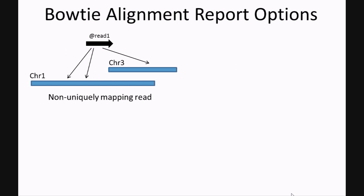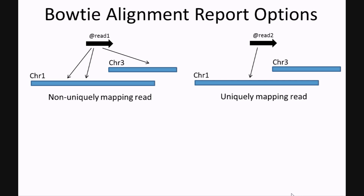In addition to setting either the -n or -v alignment option in Bowtie, which controls how a read can map to the reference genome, you can also set how Bowtie will report back read alignments. In some cases, a read may map to multiple locations in the genome. This might occur when a read originates from repetitive sequences like the telomeres, or from highly similar sequences that occur between gene families. Reads that map to multiple locations are considered non-unique, while a read that maps to a single location would be considered unique or uniquely mapping.